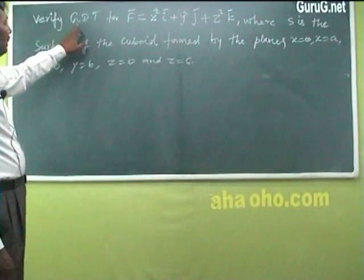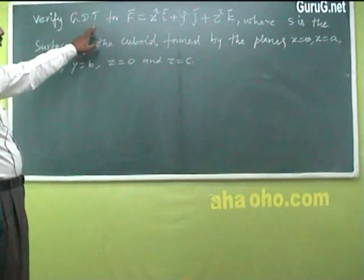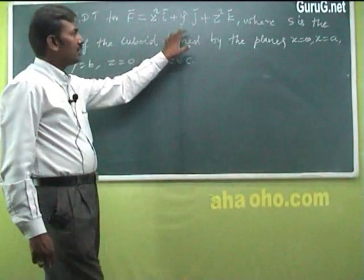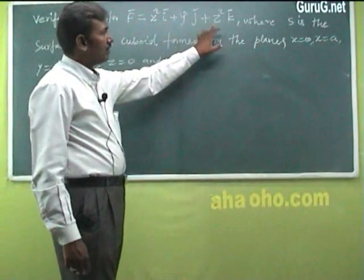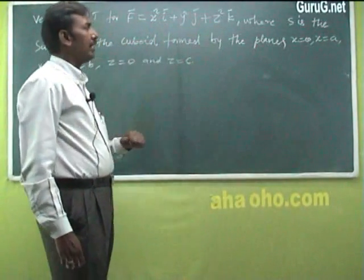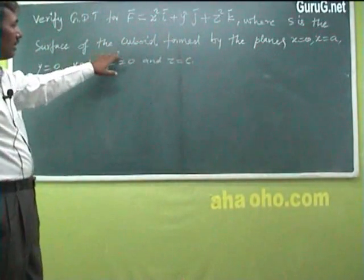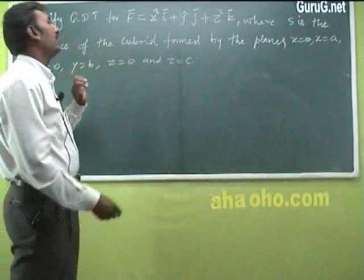Verify the Gauss Divergence Theorem for F vector equal to x²i + y²j + z²k, where S is the surface of the cuboid.